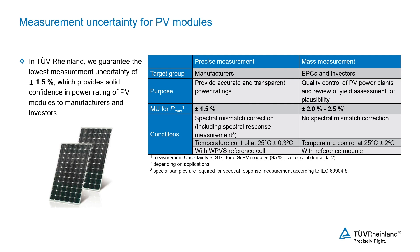Therefore, we always recommend additional pre-shipment investigation of the purchased PV modules. We can provide mass measurements with uncertainty of 2 to 2.5% in P-Max.